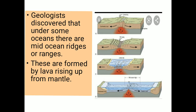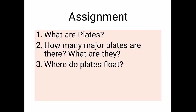In this video we have seen regarding the jigsaw puzzle and seafloor spreading. In the jigsaw puzzle we discussed plate tectonics. There are six major plates and several minor plates. In seafloor spreading we saw the formation of the oceans — how the oceans were formed and how the land spread towards different sides. Here you have an assignment: What are plates? How many major plates are there and what are they? Where do plates float? Write it in your notebook and send me through WhatsApp. Thank you children, meet you in the next video.